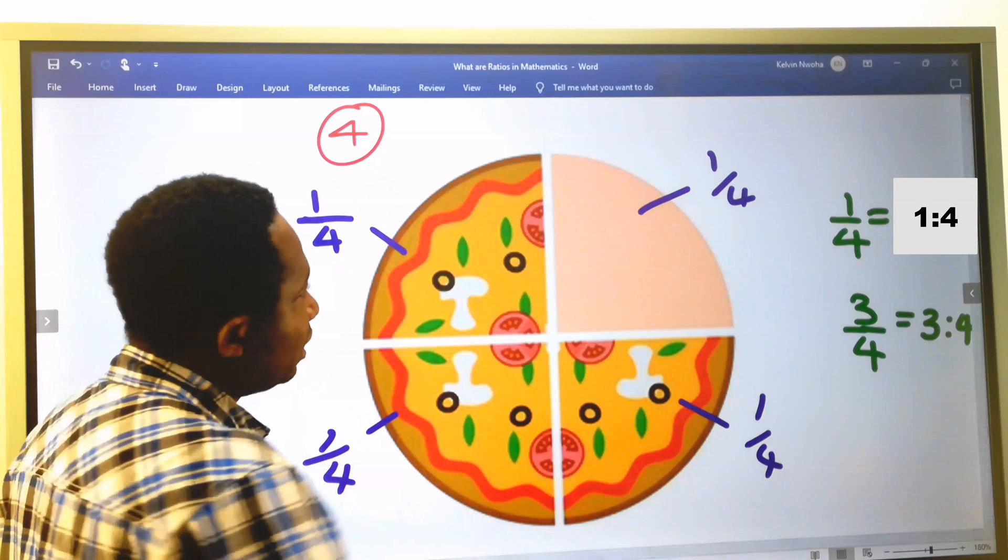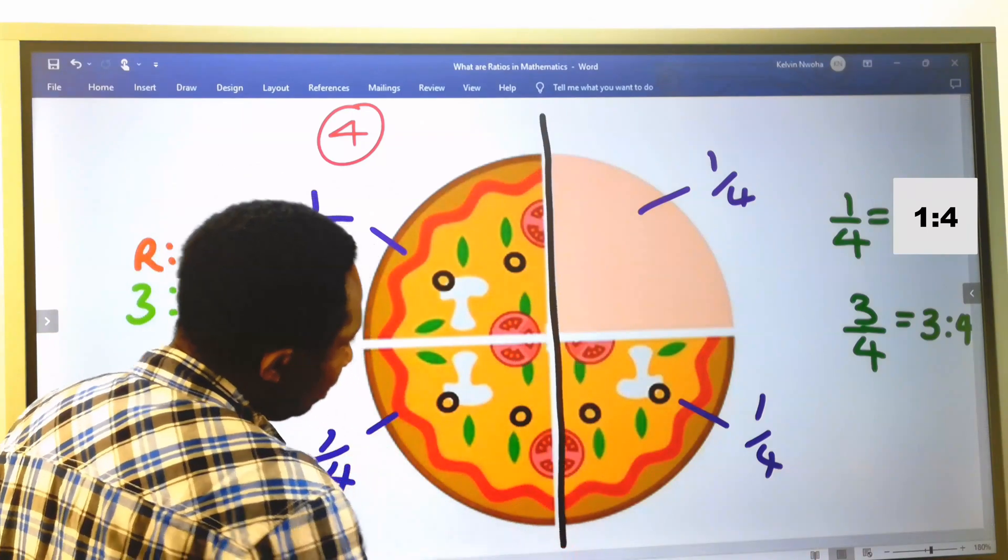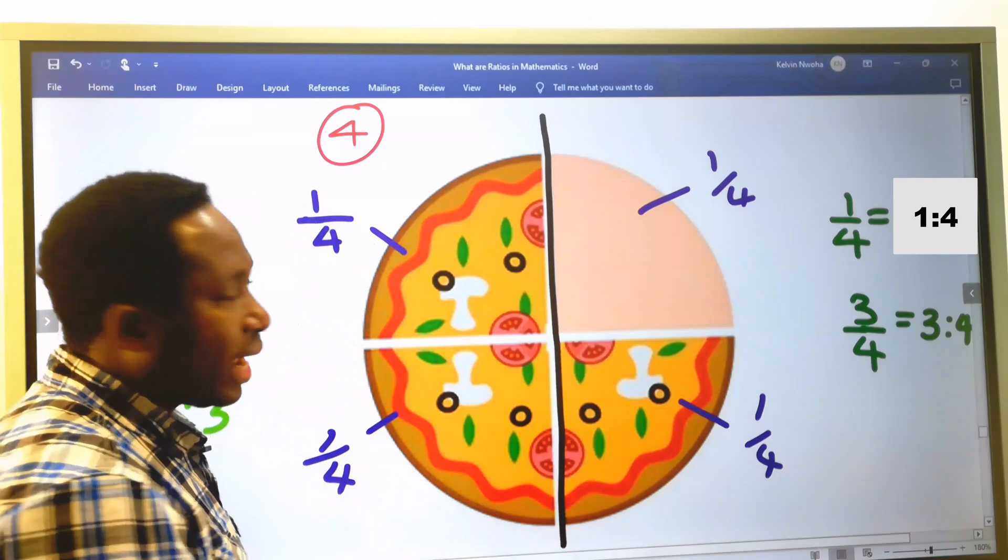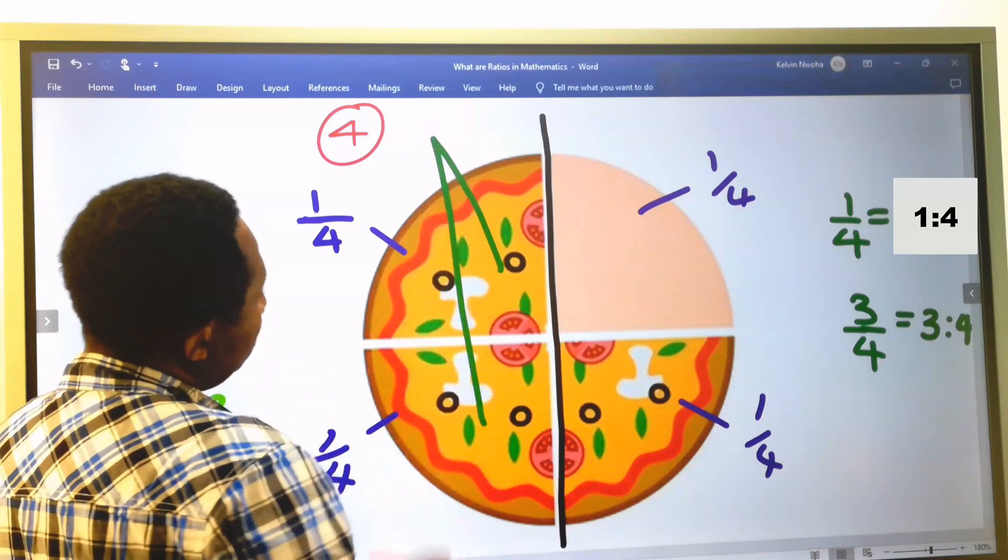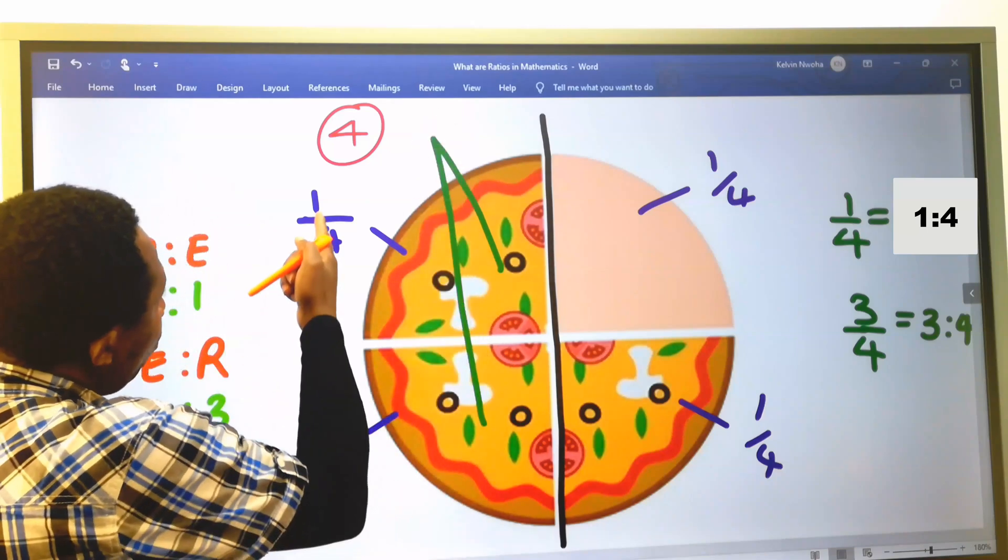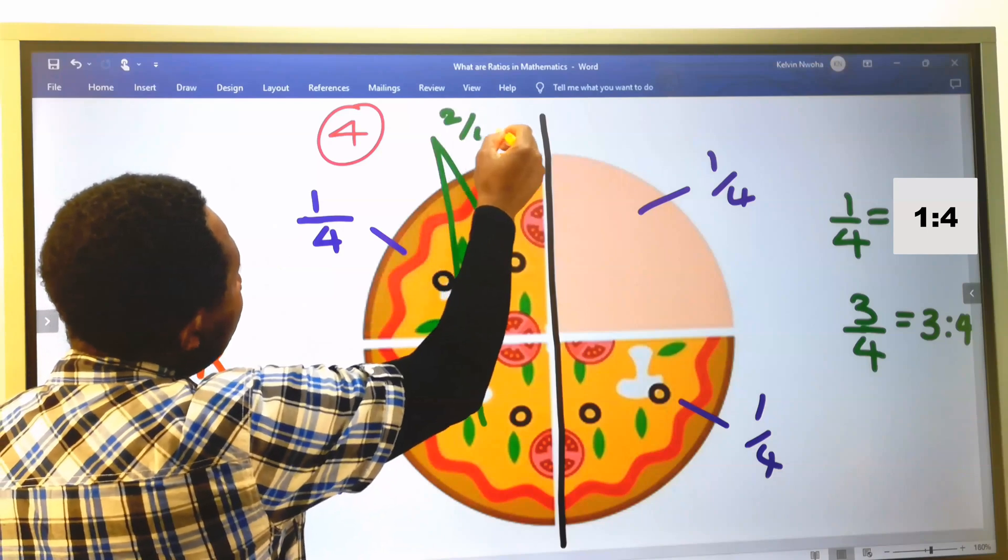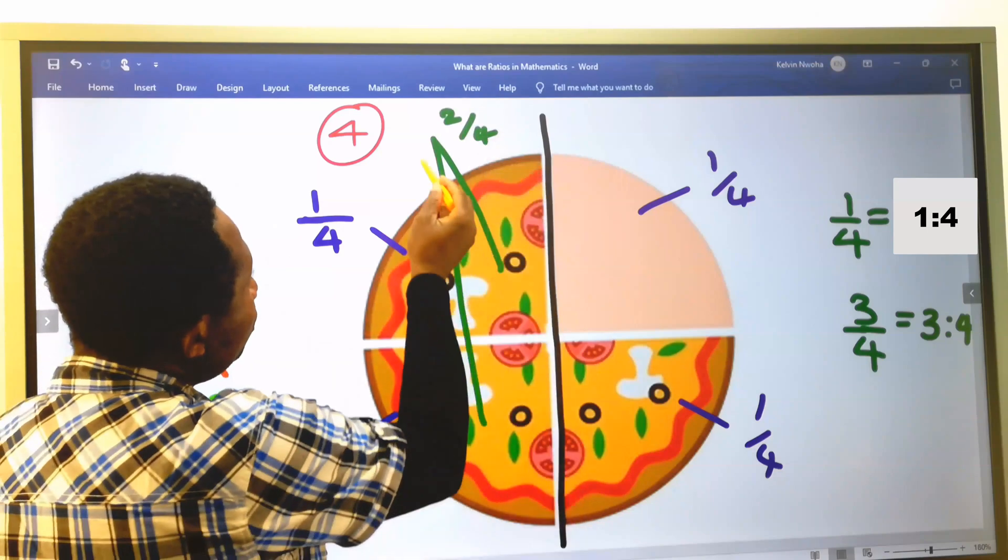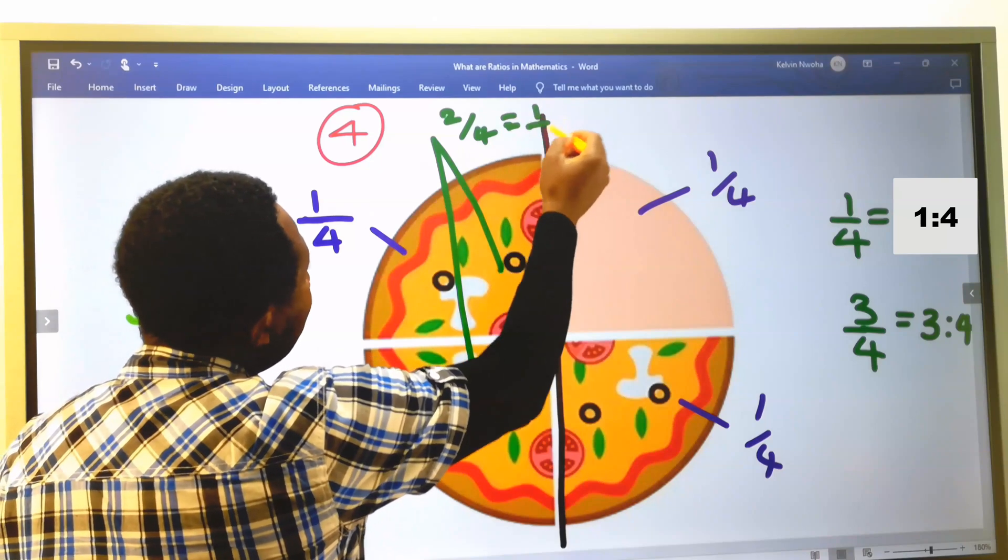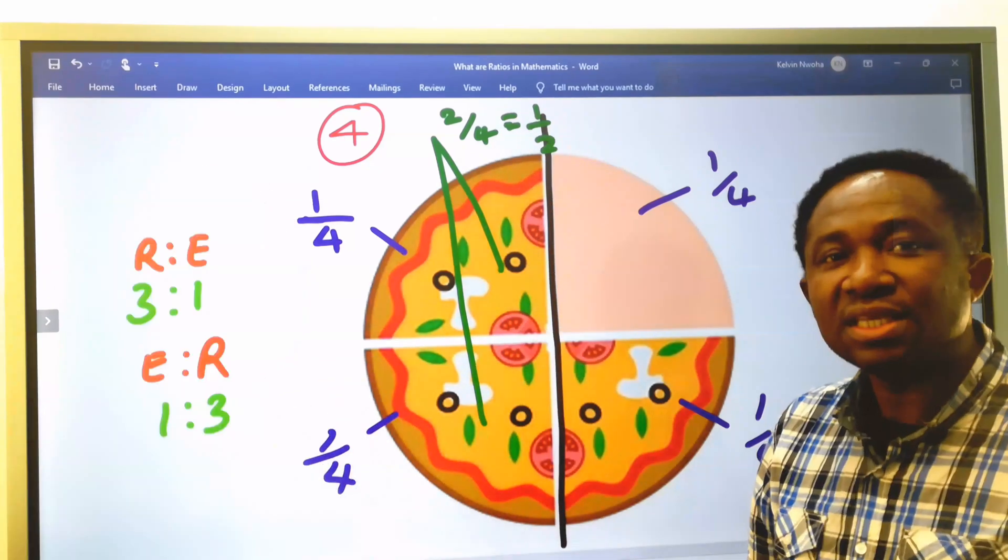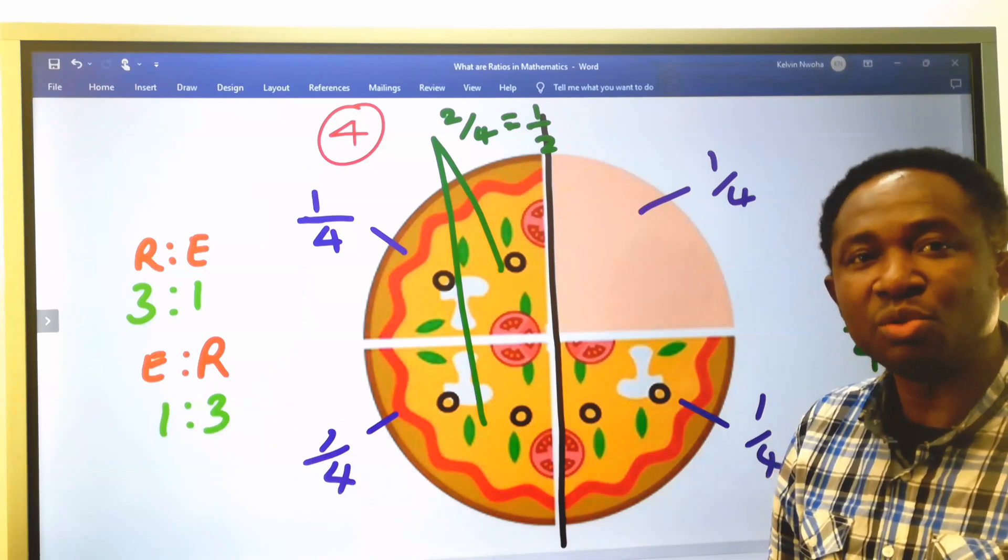In addition, if I slice this pizza into this equal part, then these 2 portions will become 1 plus 1. We are going to have 2 to ratio 4. 2 to ratio 4 is equivalent to 1 to ratio 2. This is very important in the analysis of ratio using pizza.